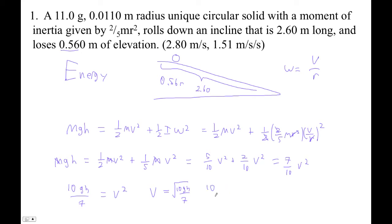So let's figure that out. I'm going to go 10 times 9.81 times 0.56 over 7. So square root of 10 times 9.81 times 0.56 divided by 7. I get 2.801. 2.801 meters per second. So that is our velocity at the bottom of the plane, that's how fast it's going.